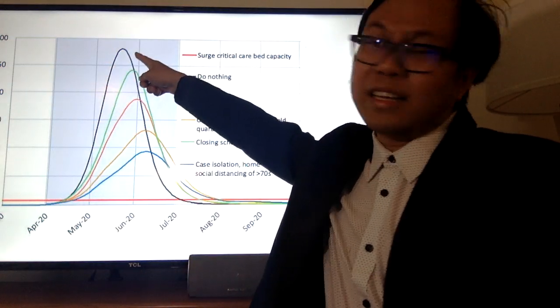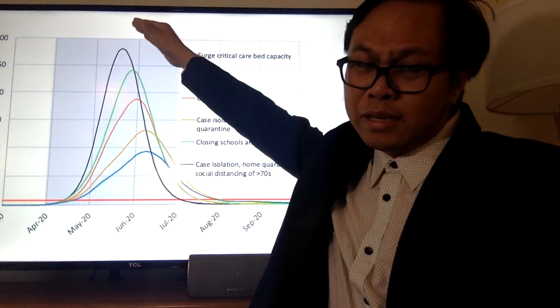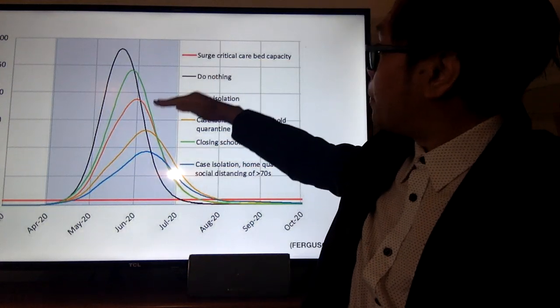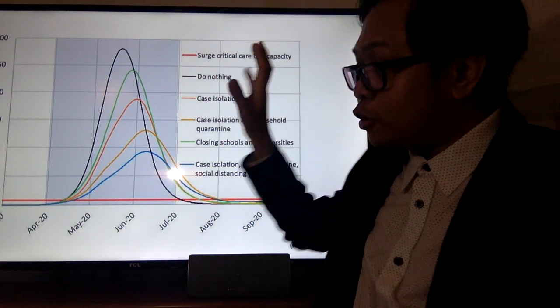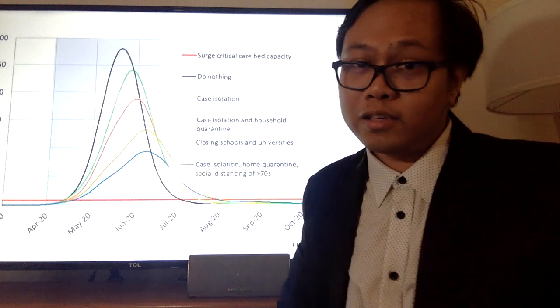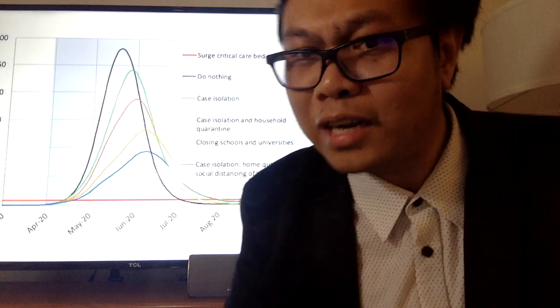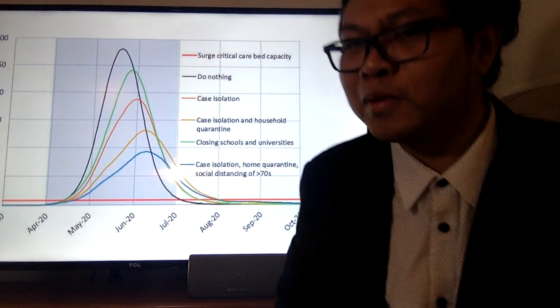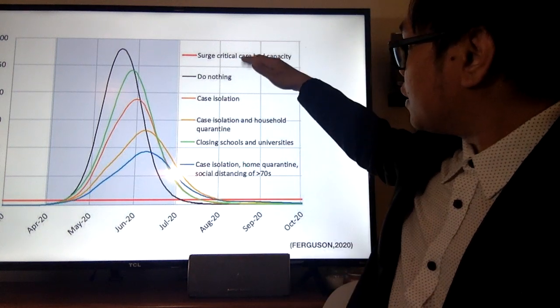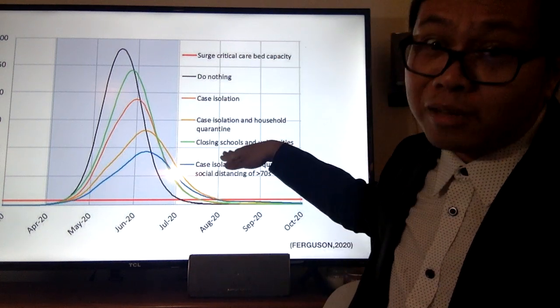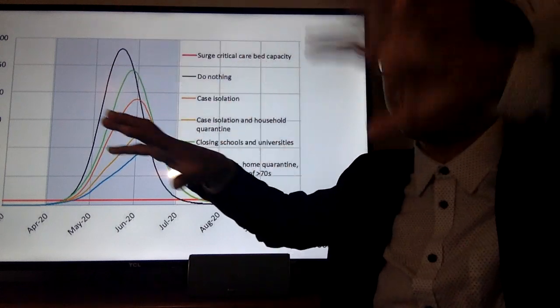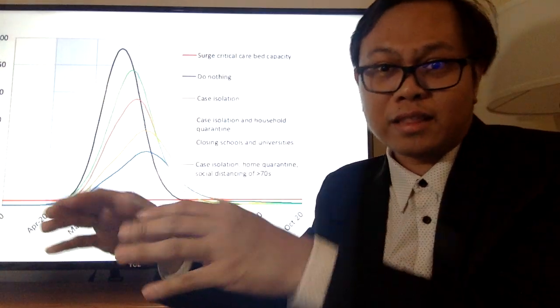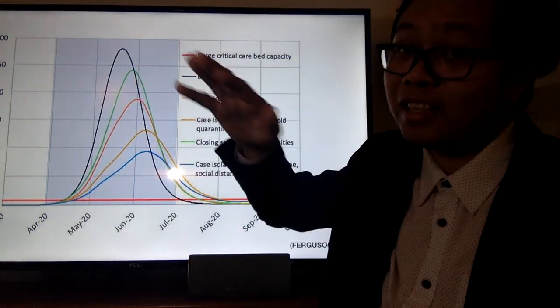Kung wala tayong gagawin, ganito yung mangyayari, ganito kataas. Pero pwede natin siyang mapapababa kapag in-isolate yung mga, ginagawa ngayon ng mga doktor natin at sinasaluduan natin, yung mga magigiting na doktor. Ituloy ang laban. Tapos, pinasara yung school, malaking impact ng pagpapasara ng school kasi maraming mga bata dun. Maraming mga estudyante. Malaking impact na sa pag-flatten ng curve.